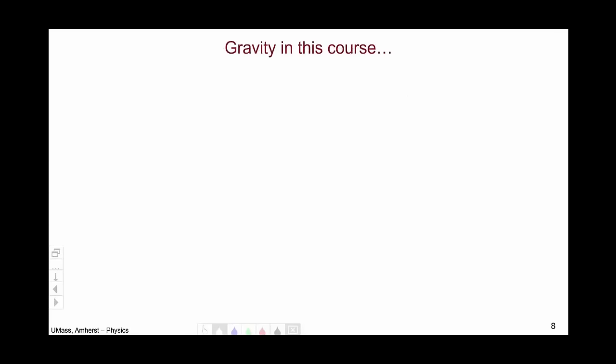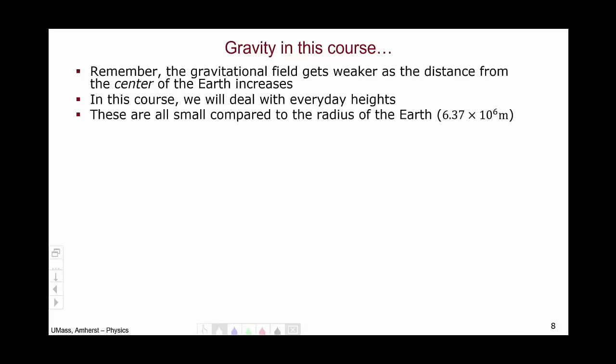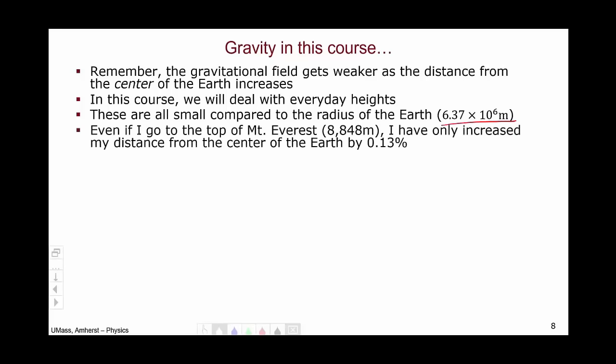So how are we going to deal with gravity in this class? Remember, the gravitational field gets weaker as the distance from the center of the object, in our case the Earth, increases. In this course, we're going to be dealing with everyday heights that we all can experience. These are all very small compared to the radius of the Earth. The radius of the Earth is 10 to the 6 meters, 6 million meters. Even if you were to go to the top of Mount Everest, which is the highest mountain on Earth, that's still only an extra 8,000 meters. And you've only increased your distance from the center of the Earth by a very, very tiny amount.